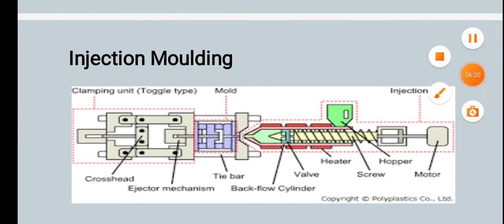Injection molding is shown in the figure. The cross head, clamping unit, toggle type, mold, and tie bar are shown, along with the injector mechanism. Also shown are the back-flow cylinder, valves, heater, hopper, screw motor, and injection unit.